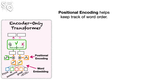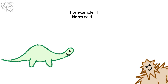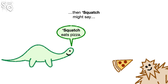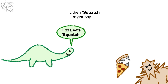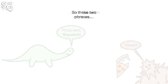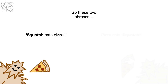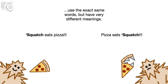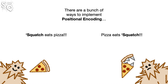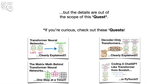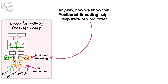Positional encoding helps keep track of word order. For example, if Norm said 'Squatch eats pizza,' Squatch might say 'Yum.' But if Norm said 'Pizza eats Squatch,' Squatch might say 'Yikes.' These two phrases use the exact same words but have very different meanings, so keeping track of word order is super important. There are a bunch of ways to implement positional encoding, but those details are out of scope for this quest.